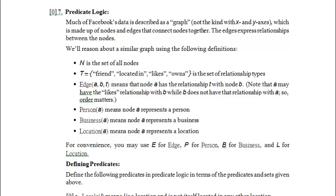Welcome to Problem 7 of the Computer Science 121 2013 Winter II practice final exam. This is a predicate logic question, and there's a bunch of introduction here. Let's go ahead and read through it.